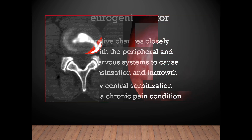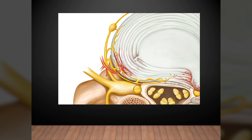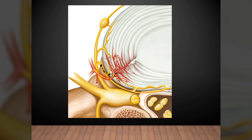That explains the chemical factor. We cannot feel any pain without neural networks. Degenerative changes closely relate to the peripheral and central nervous system to cause nerve sensitization and ingrowth. Usually, sensory nerve endings are located only in the outer one-third of the annular fibrosus. There are no nociceptors in the inner two-thirds. So we cannot feel any pain when the annular tear is localized in the inner layer. But there is a reactive process to heal the injury — neovascular growth in the damaged area with accompanying sensory nerve growth simultaneously. Sometimes the sensory nerves are very vulnerable to minor irritation, eliciting strong pain signals.